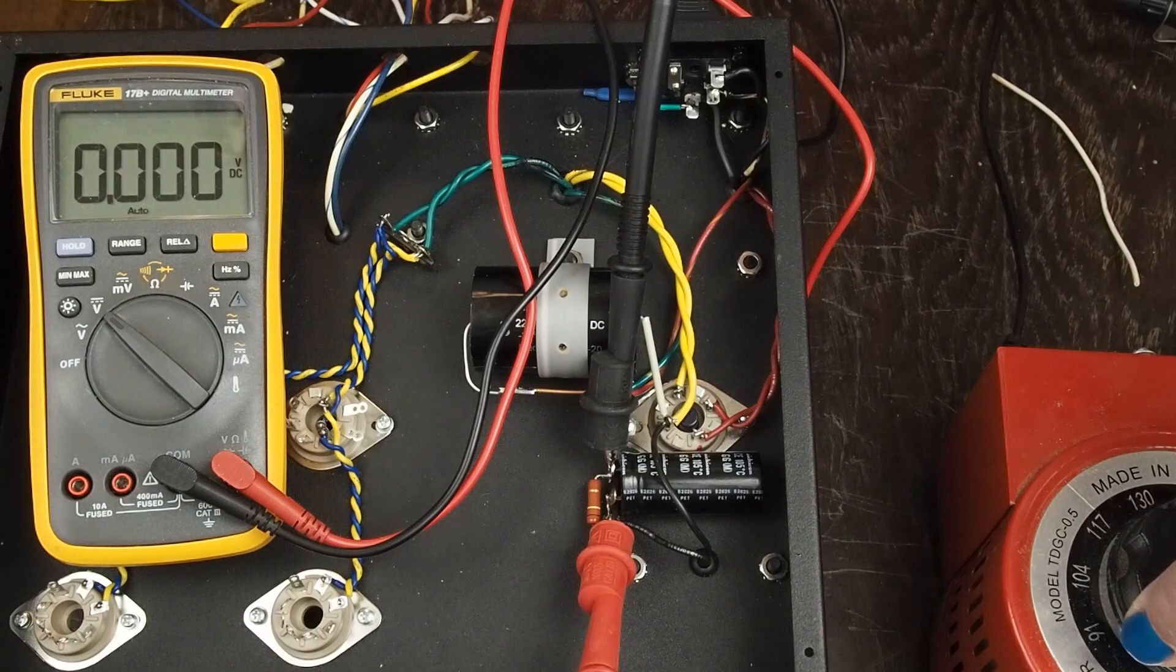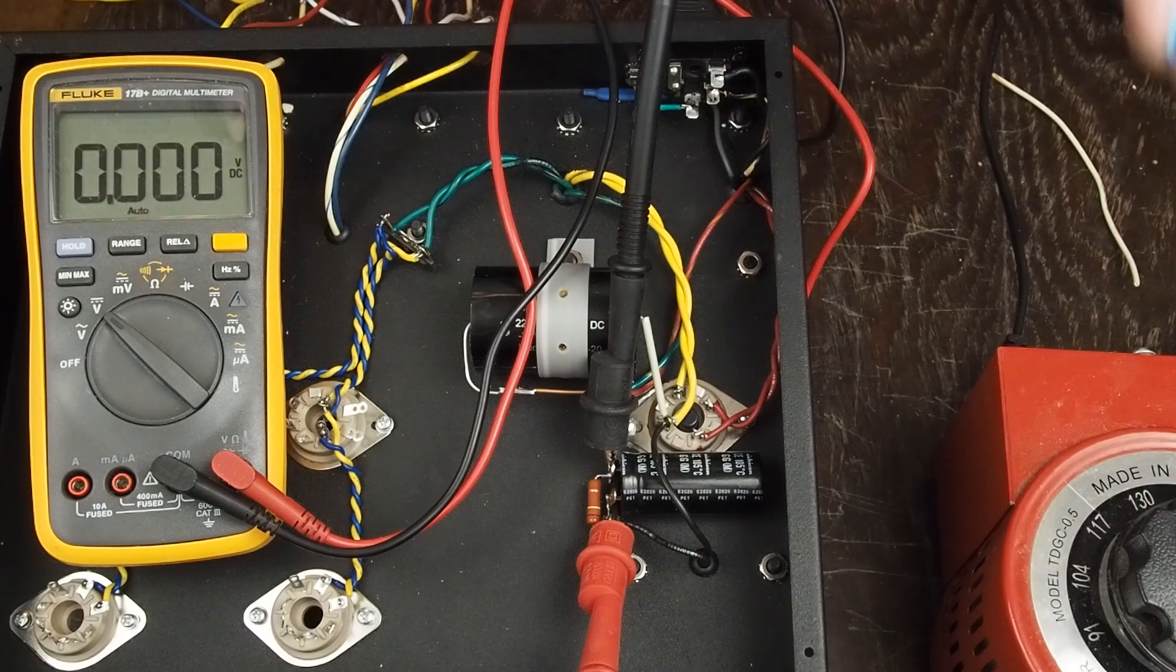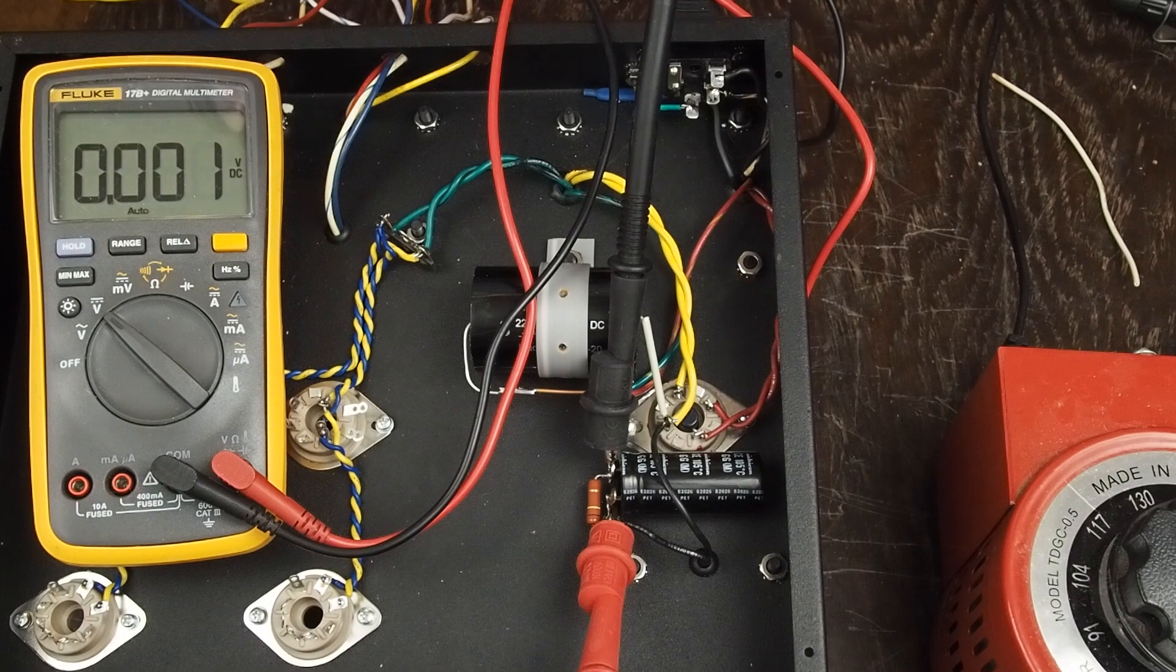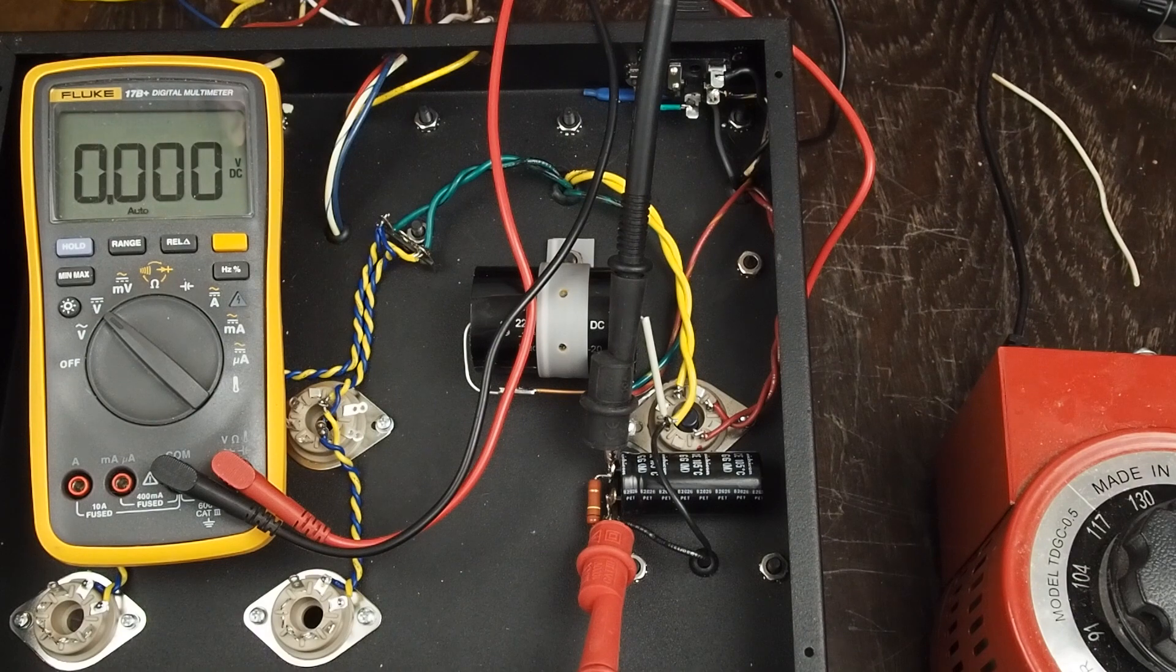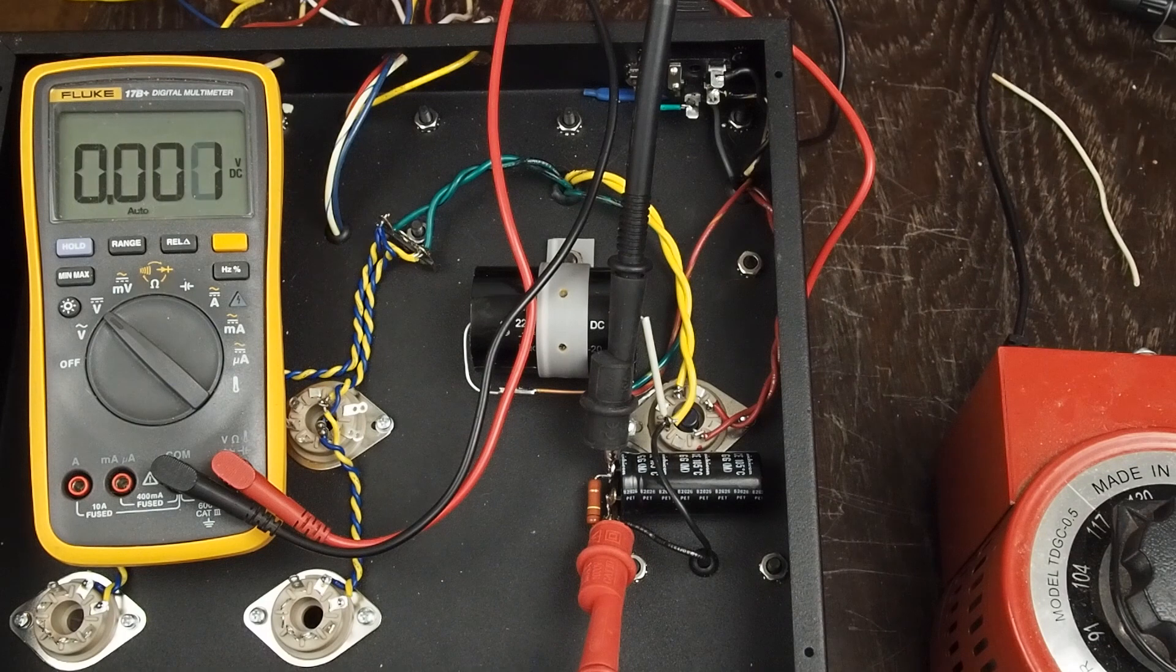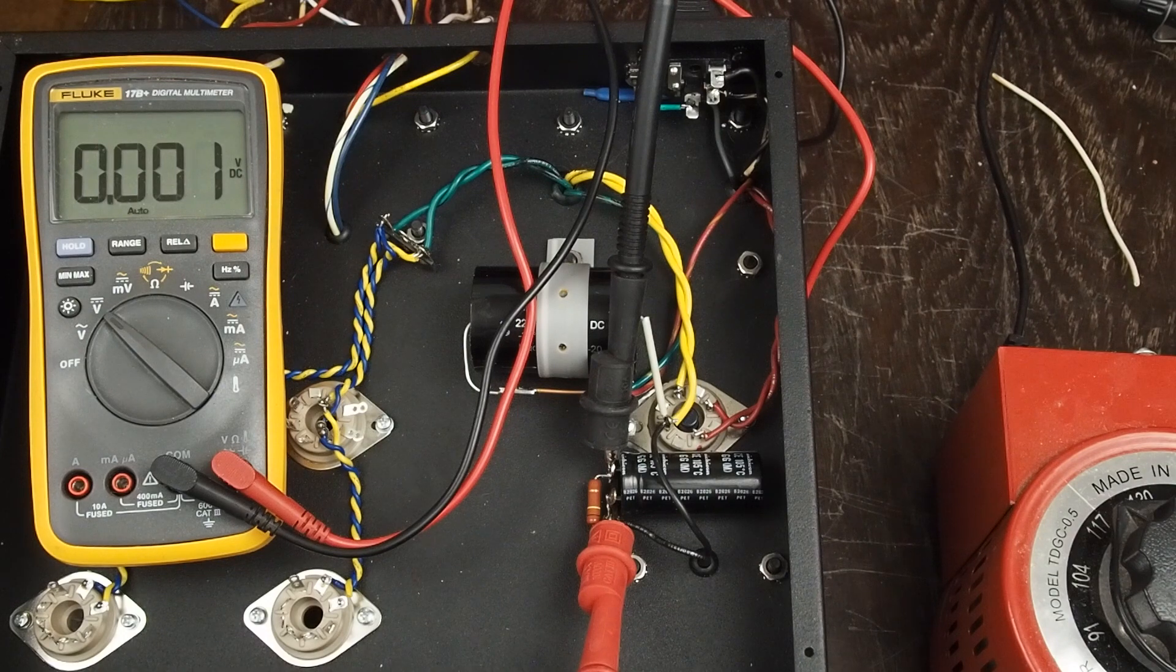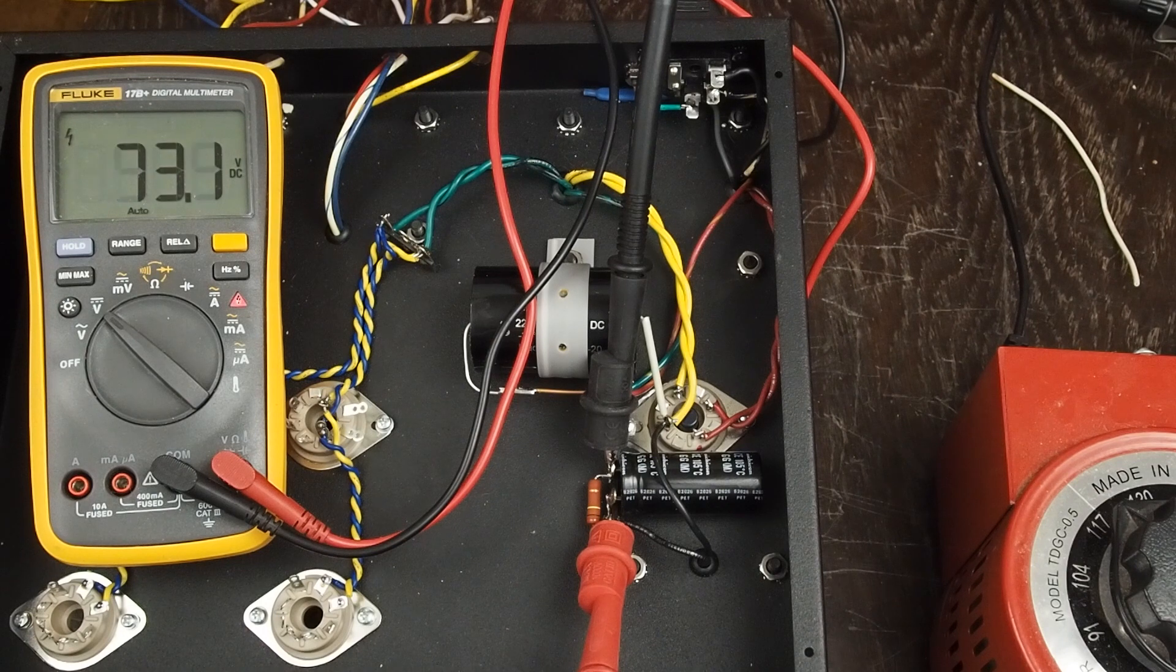So we're going to turn on the variac. And I tested this earlier, coming up slowly you want to start out by putting it on maybe 65 volts and see what you get. But I want to show you how long it takes for the B+ to come up. Go ahead and put this instantly at 120 volts. So we're just going to click it on like we were turning on the amp.